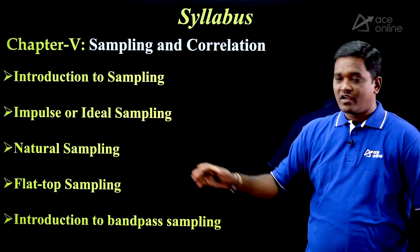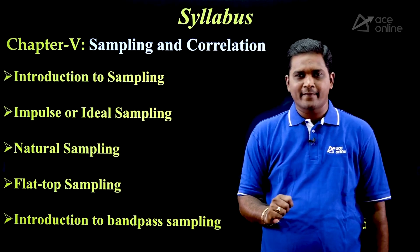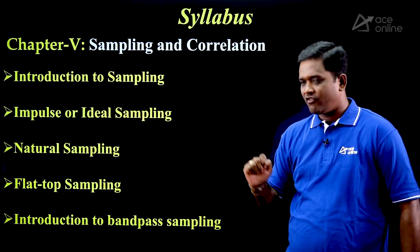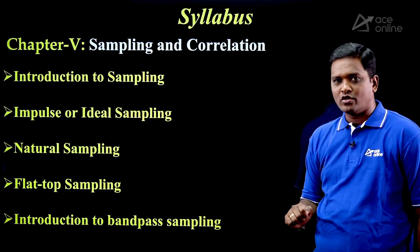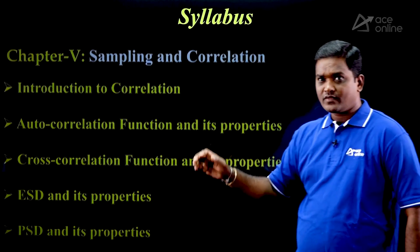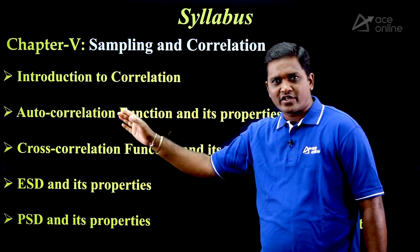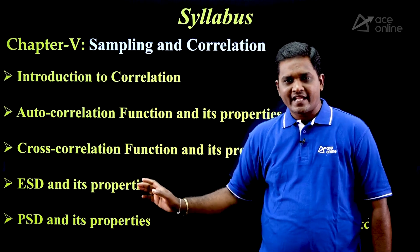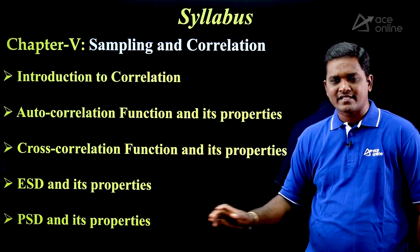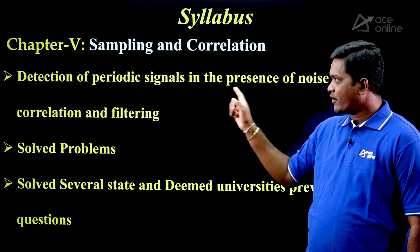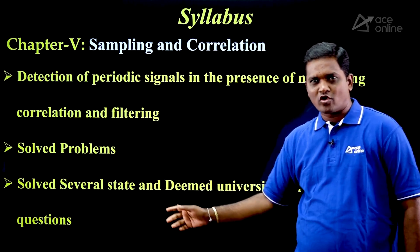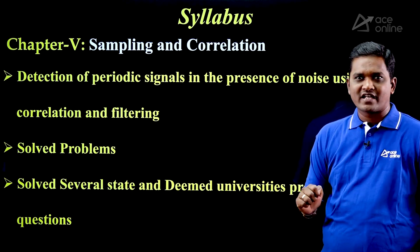Chapter 5 covers Sampling and Correlation. For sampling: introduction to sampling, impulse sampling (ideal sampling), natural sampling, flat-top sampling, and introduction to band-pass sampling. For correlation: introduction to correlation, auto-correlation function and its properties, cross-correlation function and its properties, energy spectral density and its properties, power spectral density and its properties, and detection of periodic signals in the presence of noise using correlation and filtering.